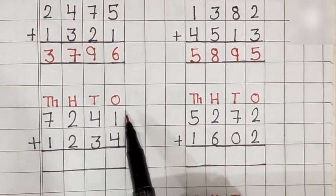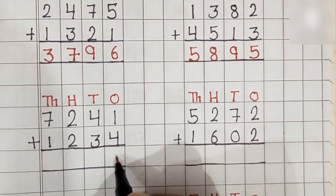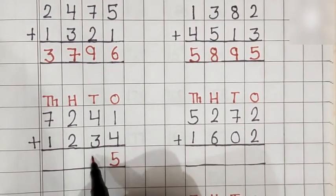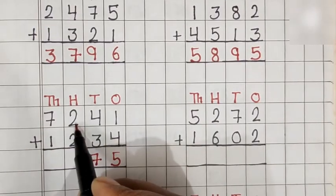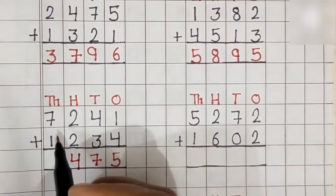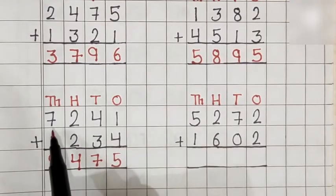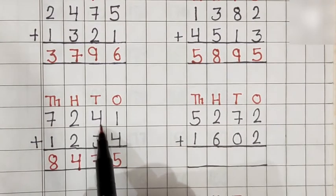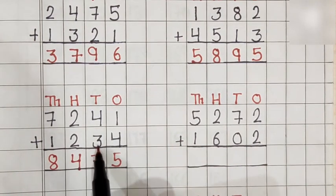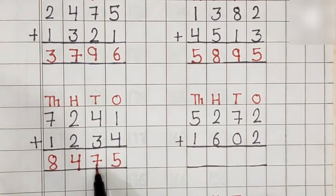Let's solve the next example. 1 plus 4 is equal to 5. 4 plus 3 is equal to 7. 2 plus 2 is equal to 4. 7 plus 1 is equal to 8. So, 7,241 plus 1,234 is equal to 8,475.